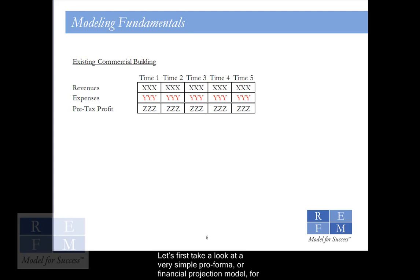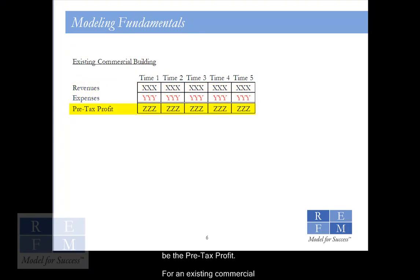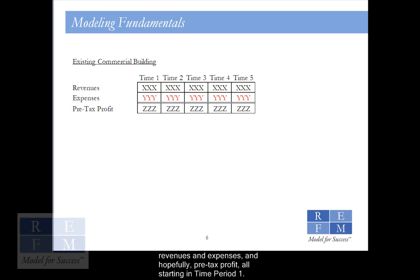Let's first take a look at a very simple pro forma, or financial projection model, for an existing tenanted commercial building. What we have here are just basic revenue and expense line items, and the net of those two would be the pre-tax profit. For an existing commercial building that's already operating, if you were to acquire it, you will have revenues and expenses, and hopefully pre-tax profit, all starting in time period 1.